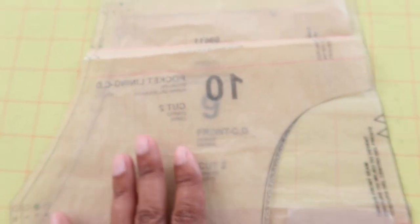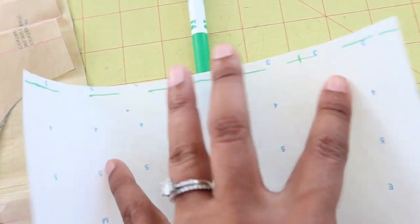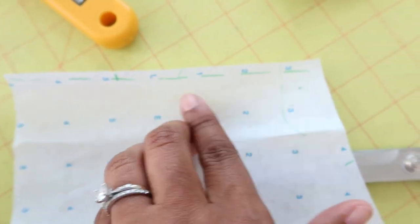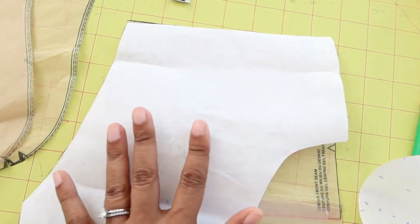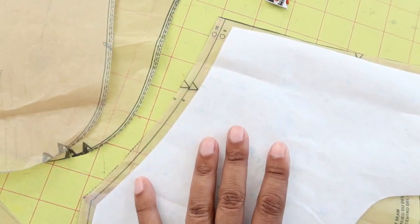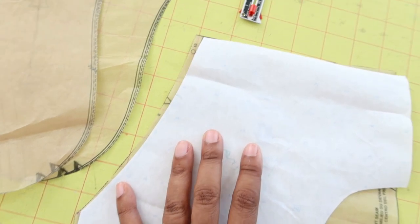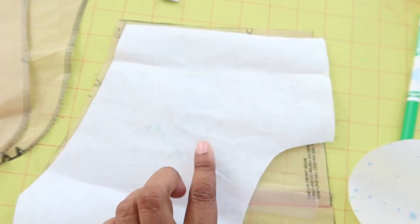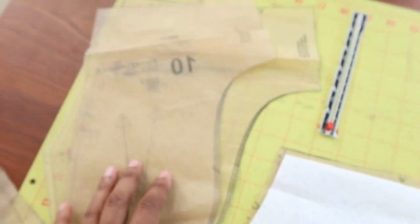I just decided to trace out the pocket pieces on this paper and then I drew a quarter inch across the top of each piece. I'm going to cut that off and then it should line up okay with the front of the pants. I cut off the quarter inch from the top and now it looks like it's going to match. So I can cut the fabric out of this piece instead of the pieces in the pattern.